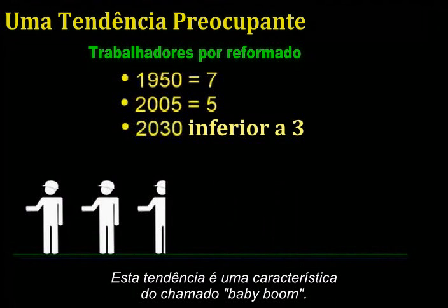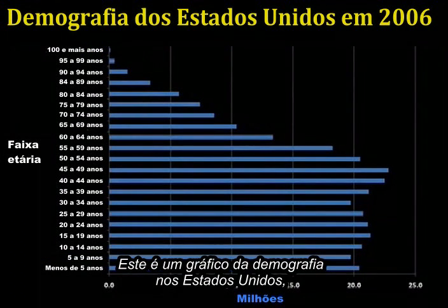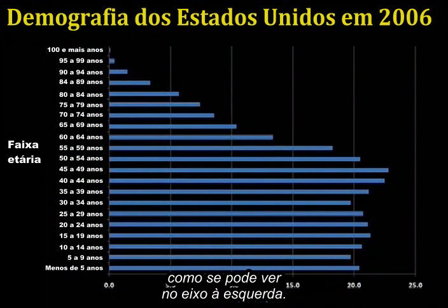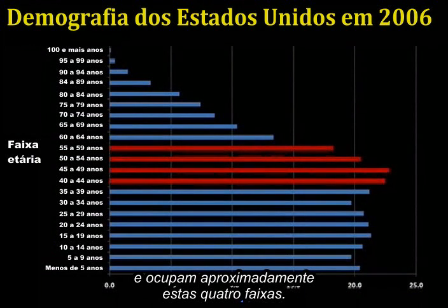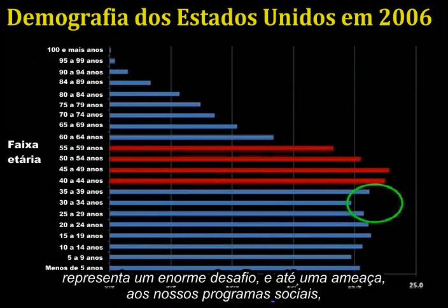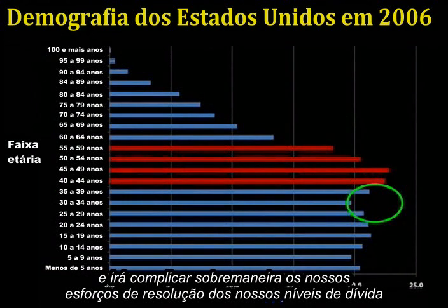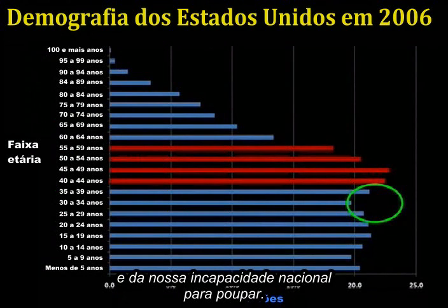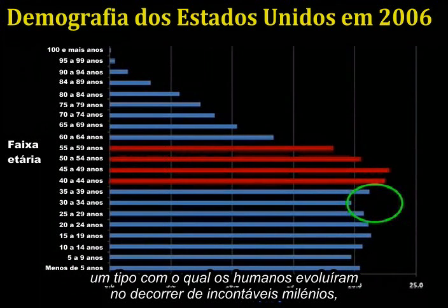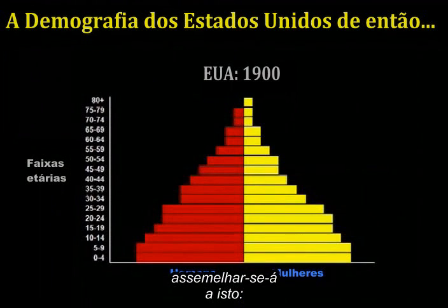This trend comes about as a feature of the so-called baby boom. This is a demographic chart of the United States, and each bar represents a clustering of all the people within a five-year-wide age window. The baby boomers number around 75 million strong, and roughly occupy four age bands. The hole that exists in the population behind the baby boomers represents an enormous challenge — even a threat — to our entitlement programs. A more normal population distribution looks like a pyramid, with men in red and women in yellow.